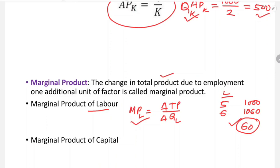Marginal product of capital is the change in total product due to employment of one additional unit of capital. Marginal product of capital equals the change in total product divided by change in quantity of capital (ΔTP / ΔQK).